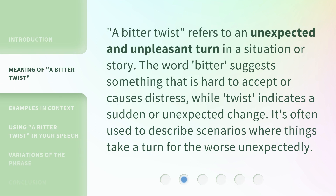A bitter twist refers to an unexpected and unpleasant turn in a situation or story. The word 'bitter' suggests something that is hard to accept or causes distress, while 'twist' indicates a sudden or unexpected change. It's often used to describe scenarios where things take a turn for the worse unexpectedly.